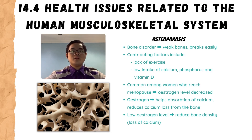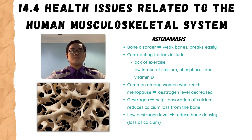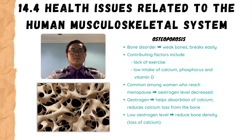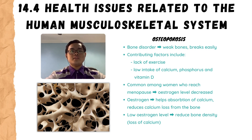Now let's move on to subtopic 14.4: health issues related to the human musculoskeletal system. The first disease is osteoporosis, a bone disorder characterized by weak bones that may break easily. As a person ages, the rate of calcium loss is higher compared to the rate of calcium absorption, causing a loss in bone mass or density. Contributing factors include lack of exercise and low intake of calcium, phosphorus, and vitamin D. Osteoporosis is common among women who have reached menopause because their estrogen level decreases.